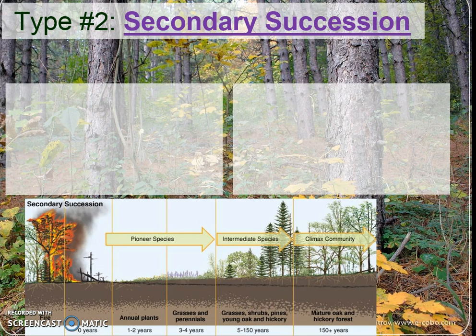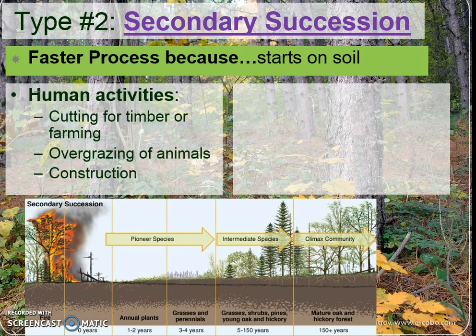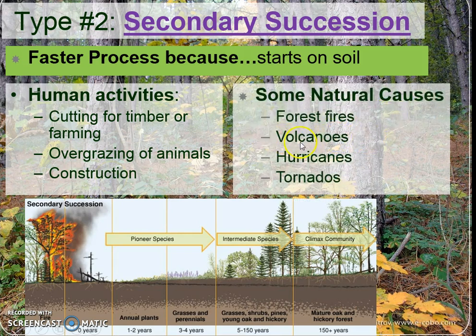Secondary succession, on the other hand, is going to happen second. Even looking at the beginning of secondary succession, we have soil. It's going to be a faster process because it does start on soil. It can be caused by human activities such as cutting for timber, farming, overgrazing of animals — like cows eating too much grass — or construction projects. Natural causes include volcanoes if some soil remains, forest fires, hurricanes, tornadoes, and depending on how a landslide goes, that too. But if there's soil, it's secondary succession, and it happens a bit faster — rather than 300 to 400 years, maybe 100 to 150 years to get back to the climax community.